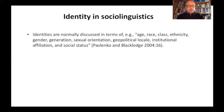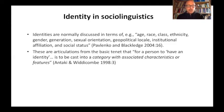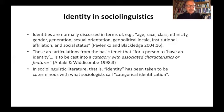Age, ethnicity, gender, sexual orientation, social class, university affiliation, professional occupation, geographic region, institutional affiliation, social status — these and a few others are the features that are normally discussed by sociolinguists and linguistic anthropologists when they deal with identity representations. Underpinning all this is the assumption that for a person to have an identity is to be cast into a category with associated characteristics or features, as Antaki and Widdicombe put it. There are endless examples confirming that in sociolinguistic literature, identity has been considered to be coterminous with what sociologists call categorical identification.